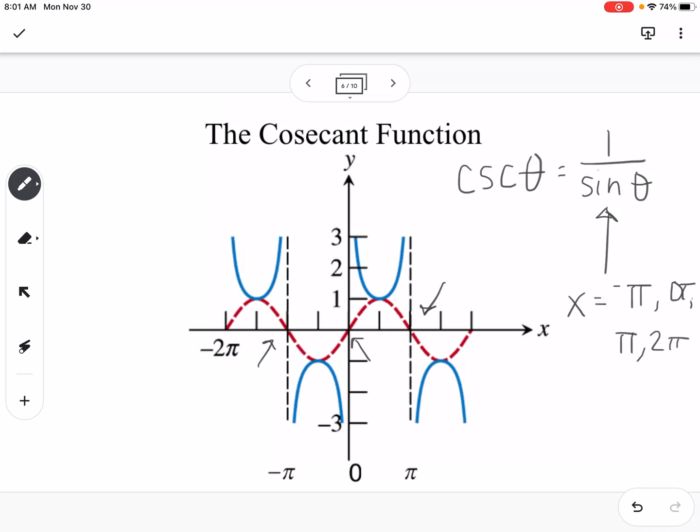Those are our asymptotes, and then the graph of cosecant comes off of the local min or max of our sine graph. If you can imagine this graph without the red sine graph in there, that's what the cosecant function looks like.